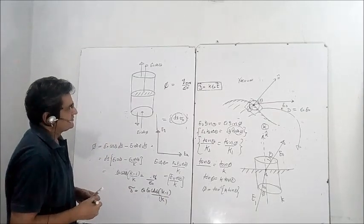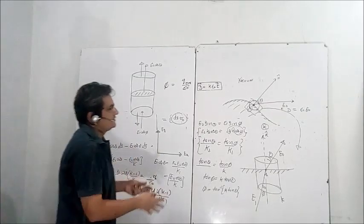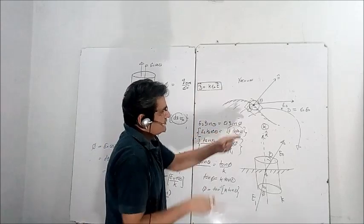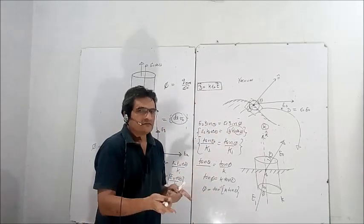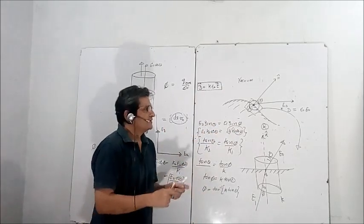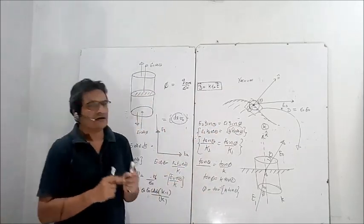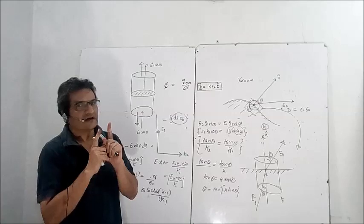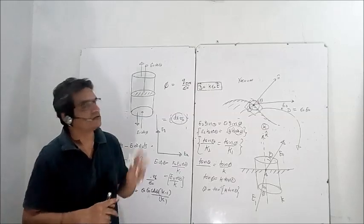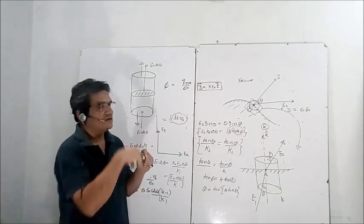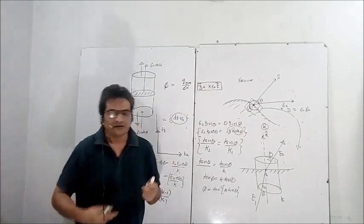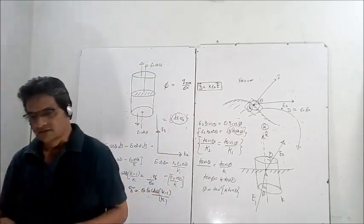So sigma_bound = ε₀·E₀·cos θ·(K−1)/K is the answer for the bound charge. We have found all three values. After this question in Irodov, there is another equally interesting and important question — especially from the flux point of view — where you have to take the component through a sphere. Try it out.